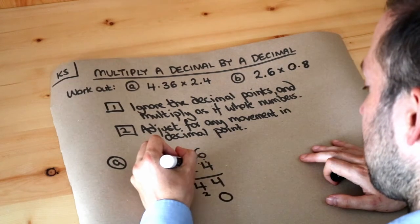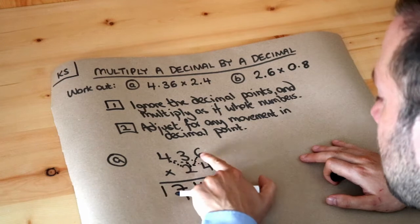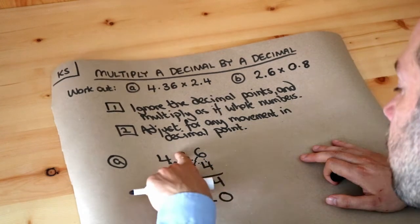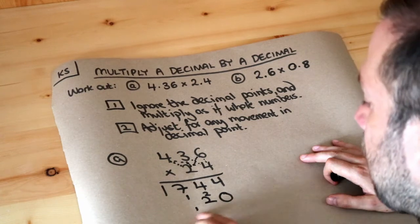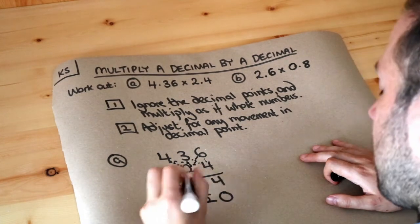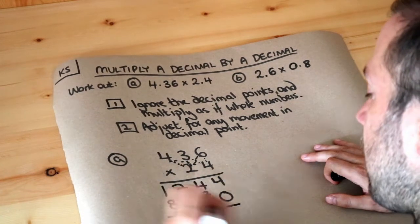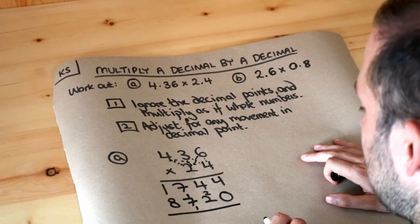So we're going to do the 6 times the 2, the 3 times the 2, and the 4 times the 2. 6 times 2 is 12, put the 2, carry the 1. 3 times 2 is 6 plus the carried 1 is 7, and 4 times 2 is 8. And then, ignoring the carries, we just add these two numbers.